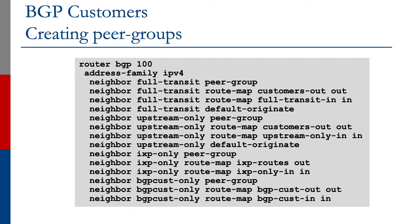For the IXP-only peer group, you only want to announce the IXP routes on the outbound and only accept certain things on the inbound, so you have a special IXP-routes-out and IXP-only-in for inbound. For the BGP customers only peer group, the outbound has only the BGP customers, and for inbound you have a separate route map that we'll look at in the next slide.